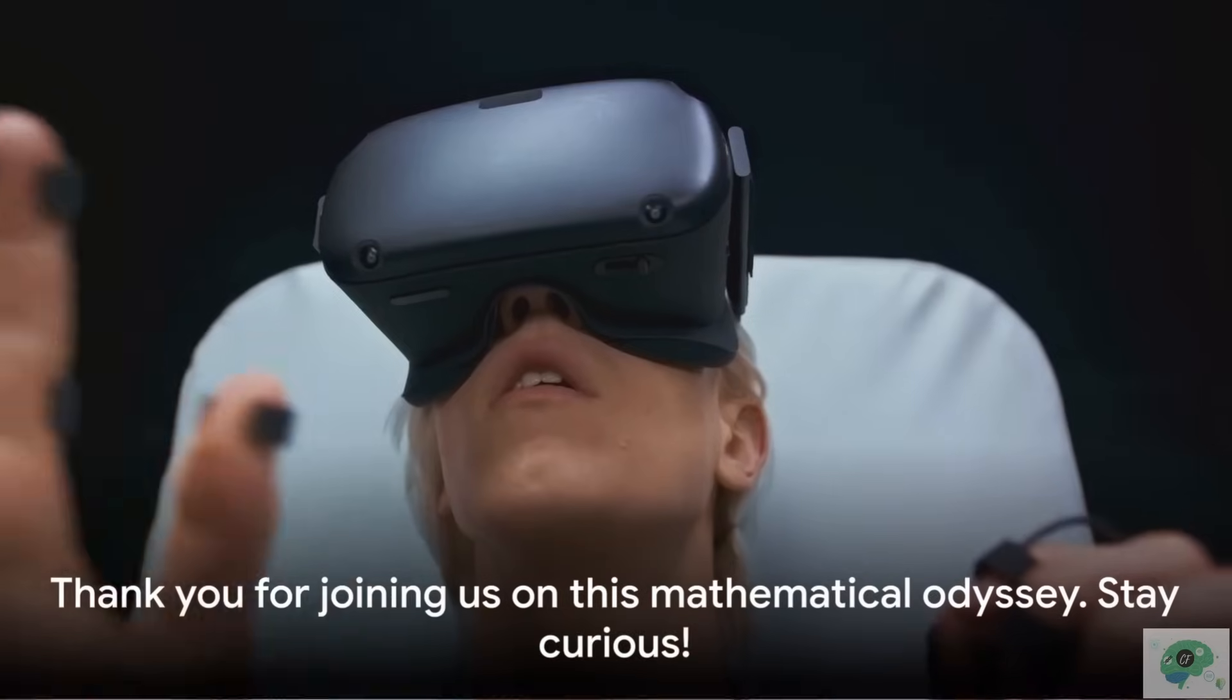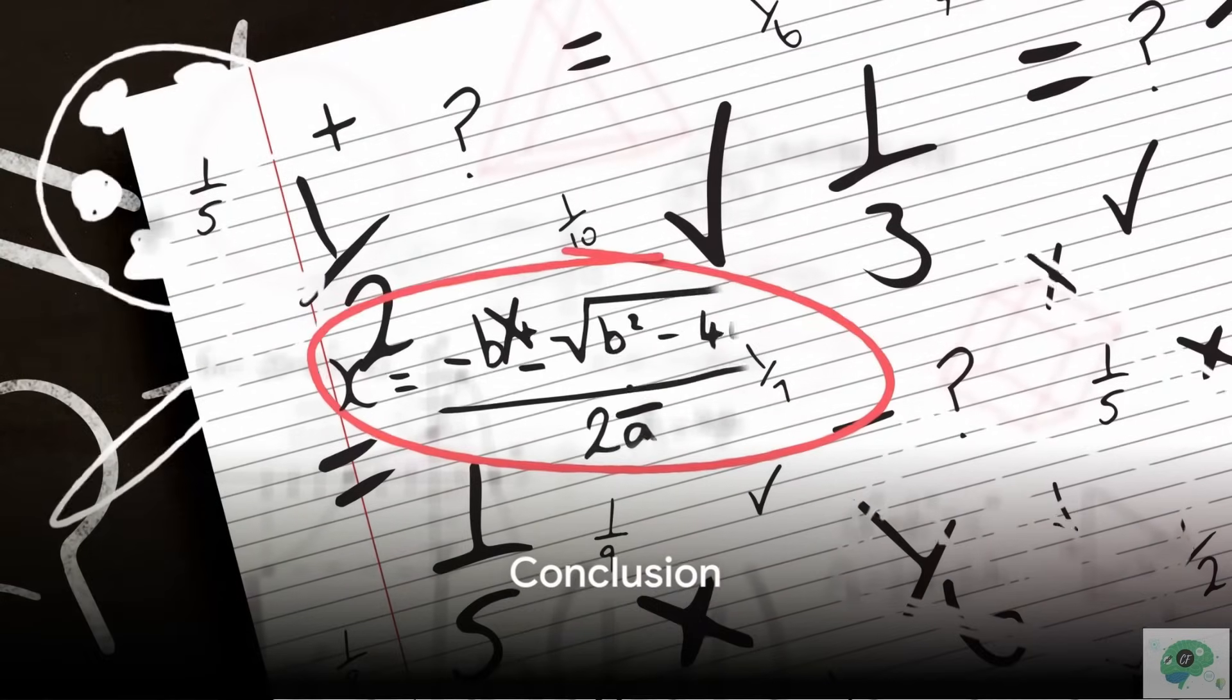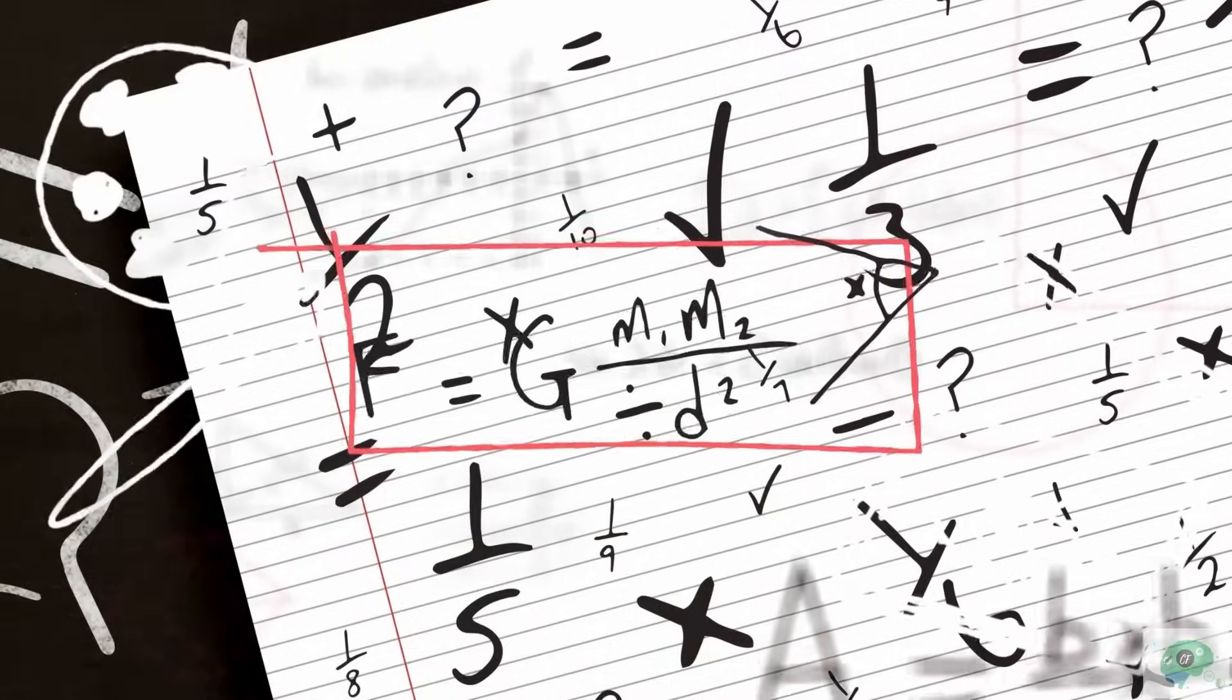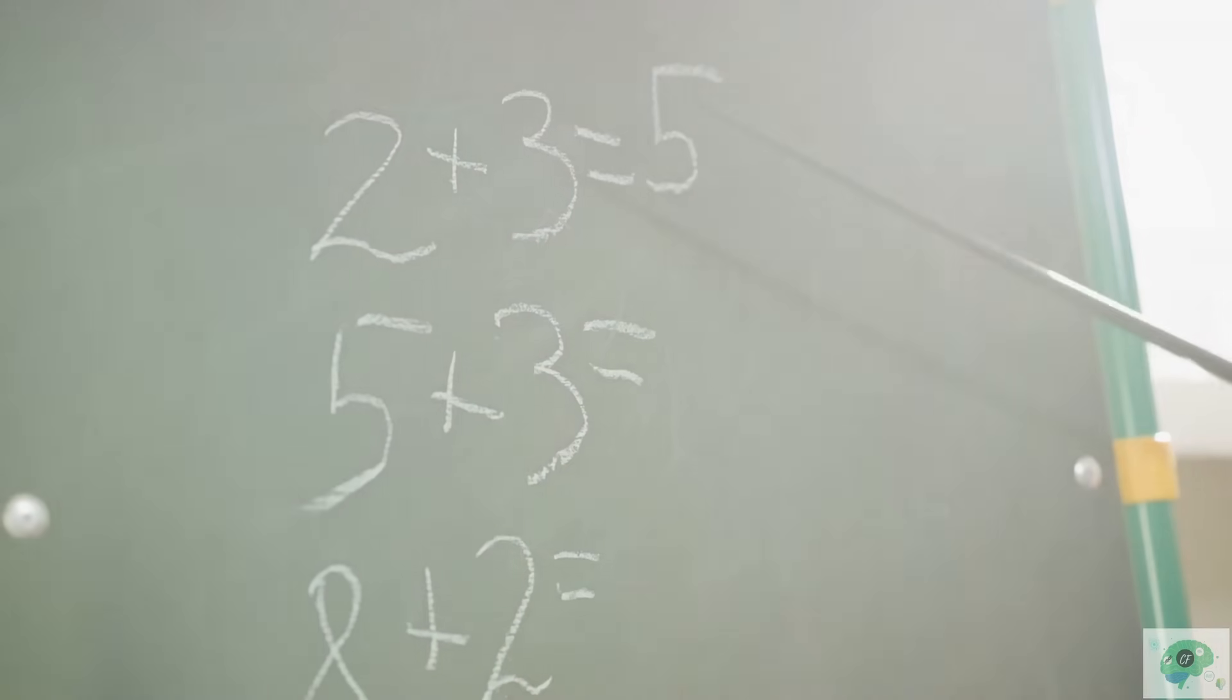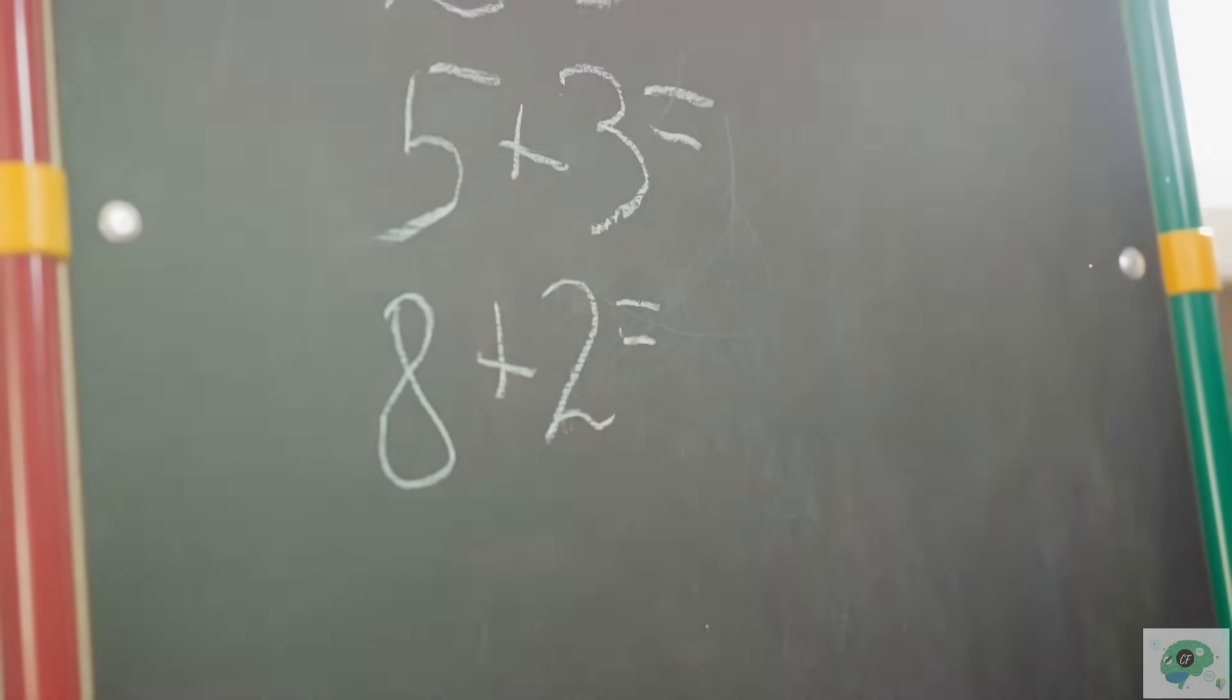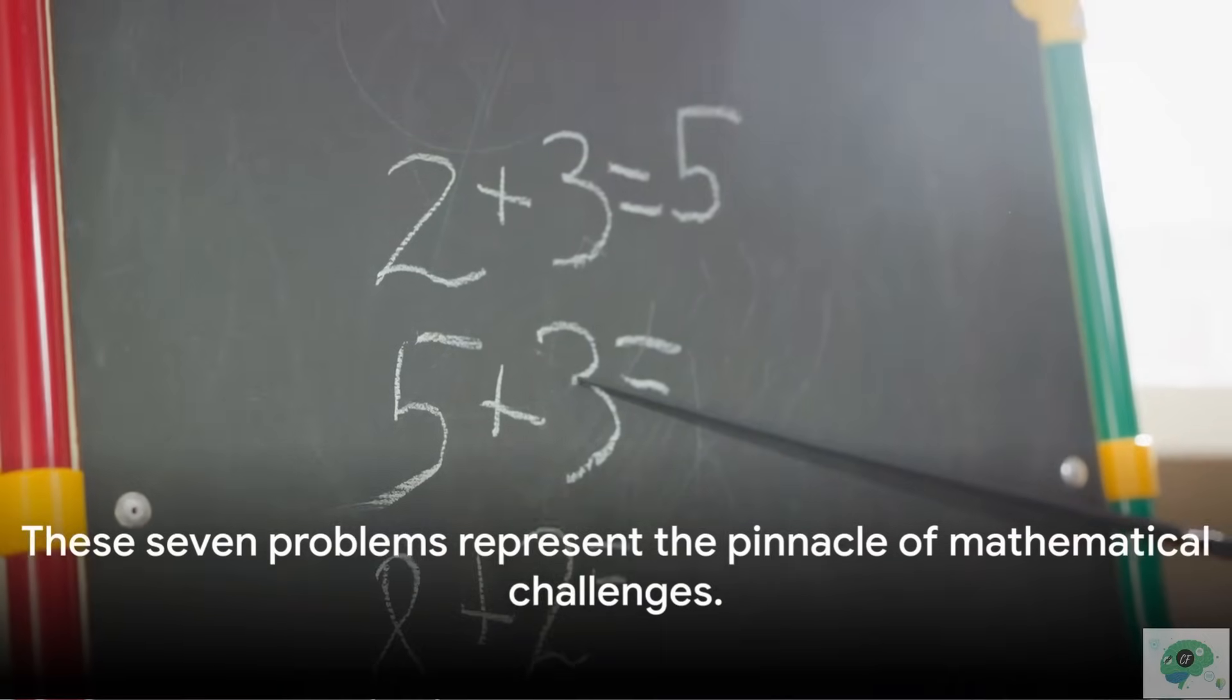With the Poincaré conjecture, we conclude our journey through the Millennium Prize problems. These seven problems represent the pinnacle of mathematical challenges. They are the Mount Everest of the mathematical world, a series of peaks that have yet to be conquered. Each problem, from the enigma of elliptic curves in the Birch and Swinnerton Dyer conjecture to the intriguing question of P versus NP in computer science, represents a unique and profound challenge.